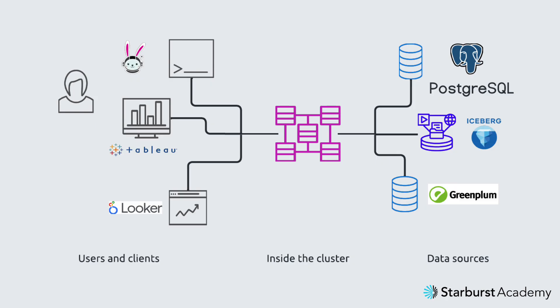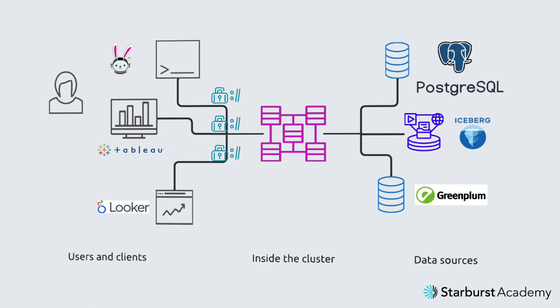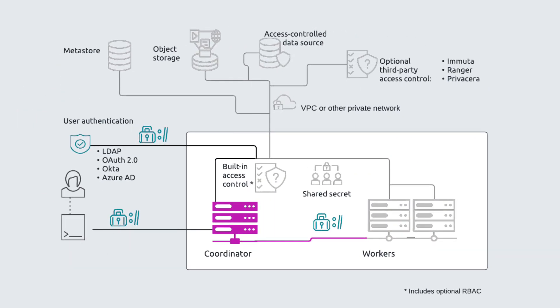Trino-based clusters allow you to authenticate users as they connect through their favorite client. Clients communicate with the cluster coordinator via a REST-like API, which can be configured to use transport layer security. Starburst Enterprise supports LDAP and OAuth 2 for user authentication.